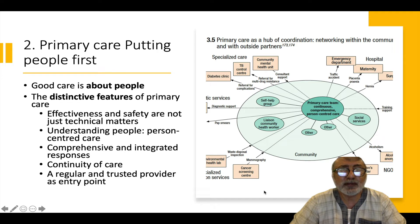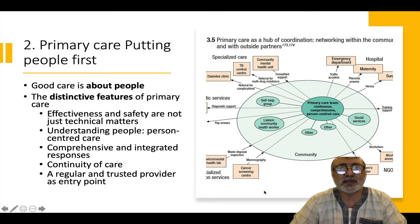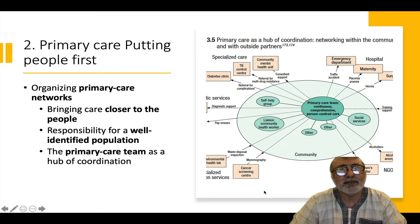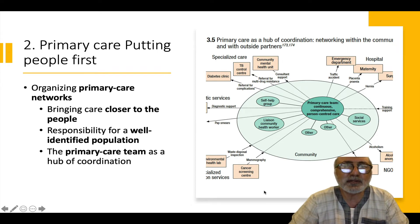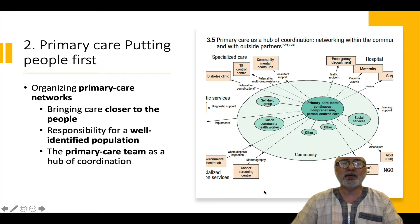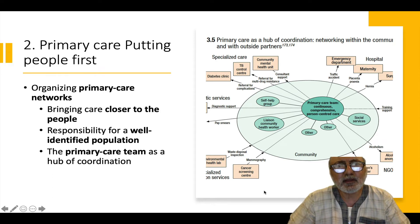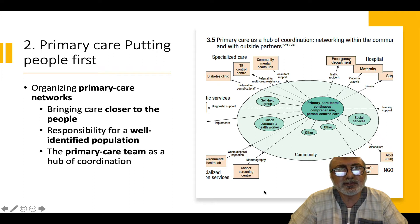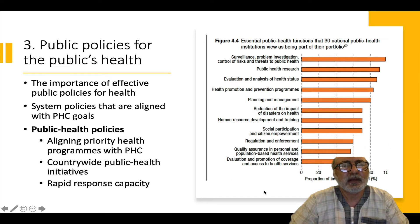An important idea is that the provider, as the entry point in primary health care, needs to be trusted and regular and not just indiscriminate use of the primary care system as we are currently seeing. They talk about organising primary care networks that bring care closer to the people, where the care system is responsible for a well-defined population and the primary care team is seen as a hub of coordination for that well-defined population. These ideas are a very important distinction from where Alma-Ata was, reflecting the growing conversation around how to make primary health care much more effective.